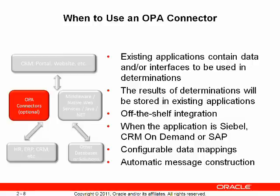As a general rule, OPA connectors should always be evaluated as the first integration alternative. Each connector provides stateless determinations, integration with web-based dynamic interviews, or both. Each also provides the ability to map between policy models and application data. Each connector handles many of the advanced capabilities of OPA in a predefined way, eliminating much of the work in packing and unpacking messages between OPA and the relevant application, and ensuring maintainability across versions of both OPA and the application itself.